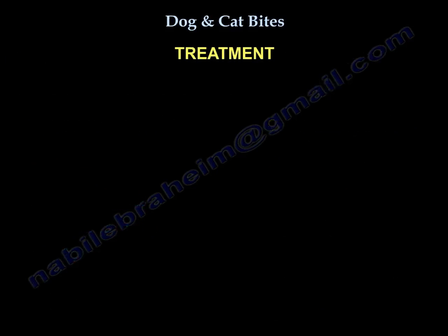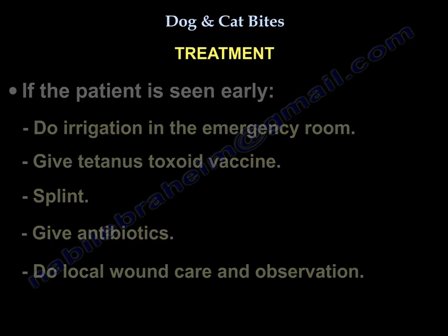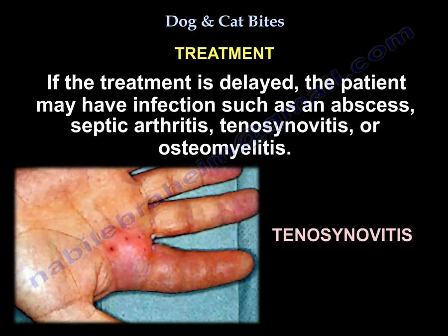Treatment: if the patient is seen early, you will do irrigation in the emergency room, give tetanus toxoid, splint, administer antibiotics, perform local wound care, and observe. If treatment is delayed, the patient may develop infection such as an abscess, septic arthritis, tenosynovitis, or even osteomyelitis.